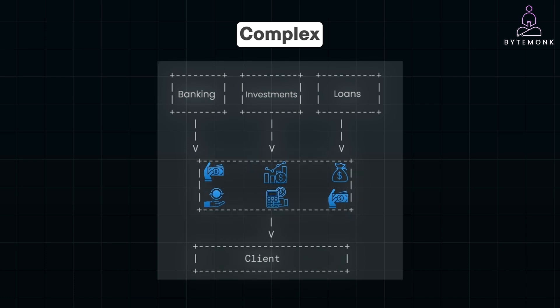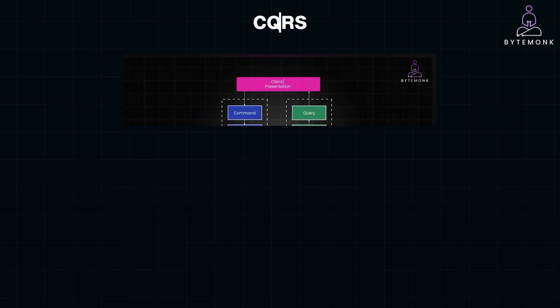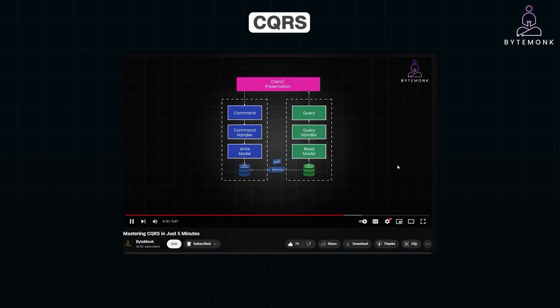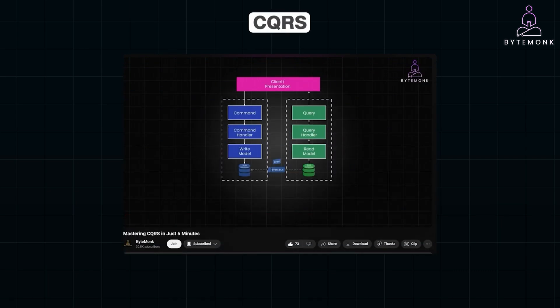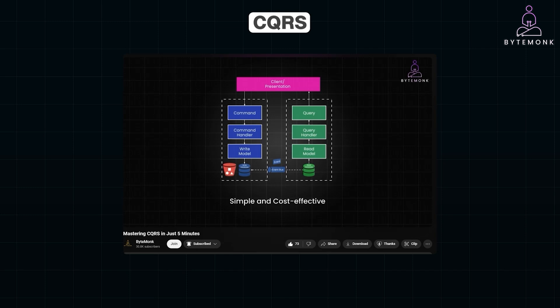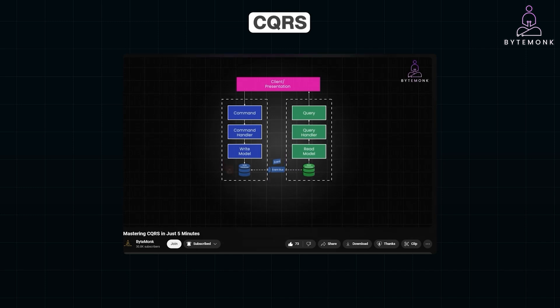While the aggregator pattern excels at orchestrating requests across multiple services, it often works hand-in-hand with another powerful pattern: CQRS, or Command Query Responsibility Segregation. CQRS further refines the separation of concerns by splitting the system into two distinct models — one optimized for handling commands and another for queries. To learn more about it, check out my CQRS video in the microservices playlist.